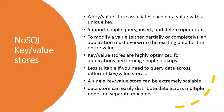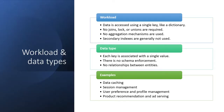The key-value database works using a single key like a dictionary with an associated value. There is no concept of joins, logs, unions, or aggregation, and secondary indexes are not used. Each key is associated with one value — there is no schema rigidness and no relationship between entities. It is used for user preference and profile management, session management, data caching, and product recommendations.